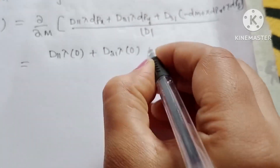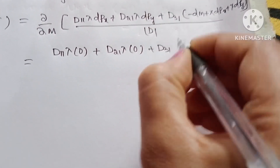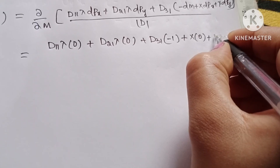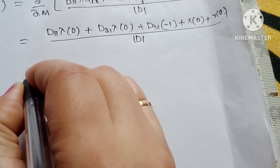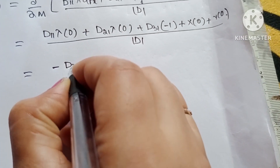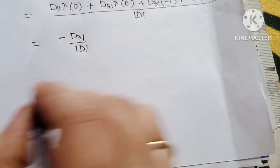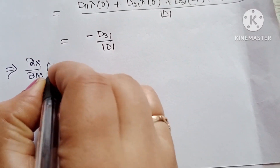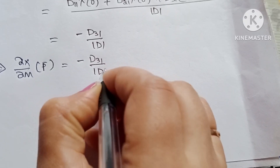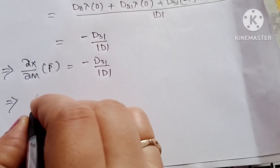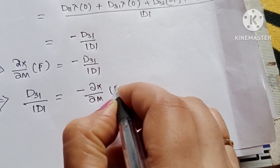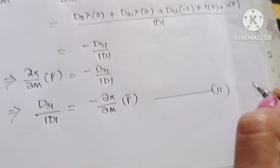Since prices are constant, the dpx and dpy terms are zero. So d11·λ multiplied by 0 is zero. Then d31 multiplied by minus 1, plus x into 0, plus y into 0, divided by the value of the determinant. This equals minus d31 divided by the value of the determinant. So del x / del m keeping prices constant equals minus d31 / |D|, or equivalently d31/|D| equals minus del x / del m keeping prices constant. This becomes equation number 11.